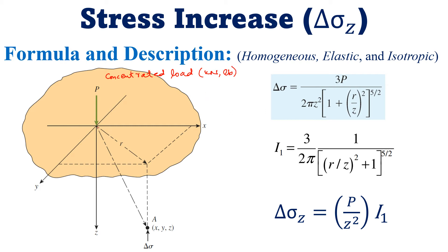When a point load P acts on any point on the surface of earth, it produces some effects on the points below this load. That point may be far away from the vertical position of this load. Suppose this load is acting on the z-axis of the space — this is the z-axis or depth axis. We have two other axes: x and y. If a point load P acts on the surface of earth, there is a point A which has coordinates x, y, z, considering the load point as the origin.